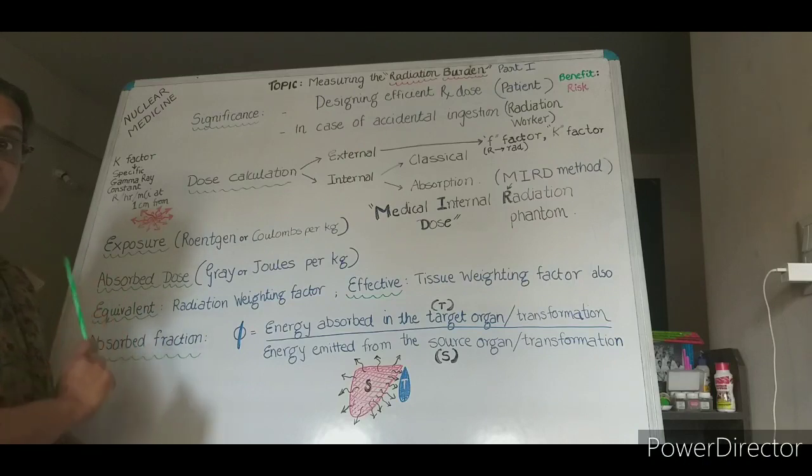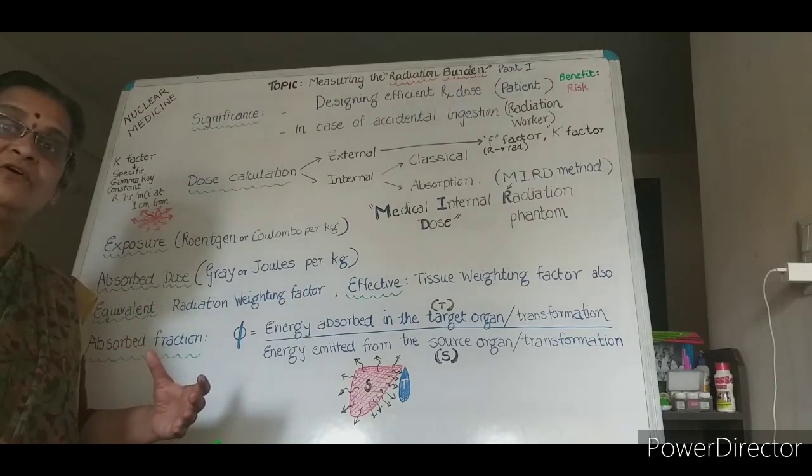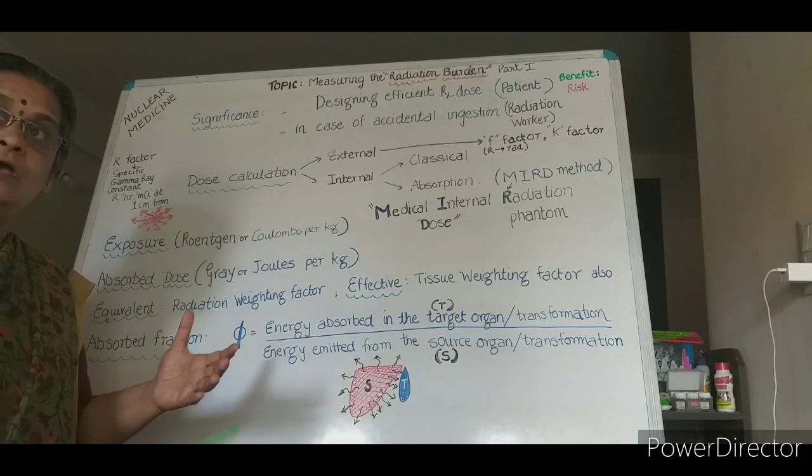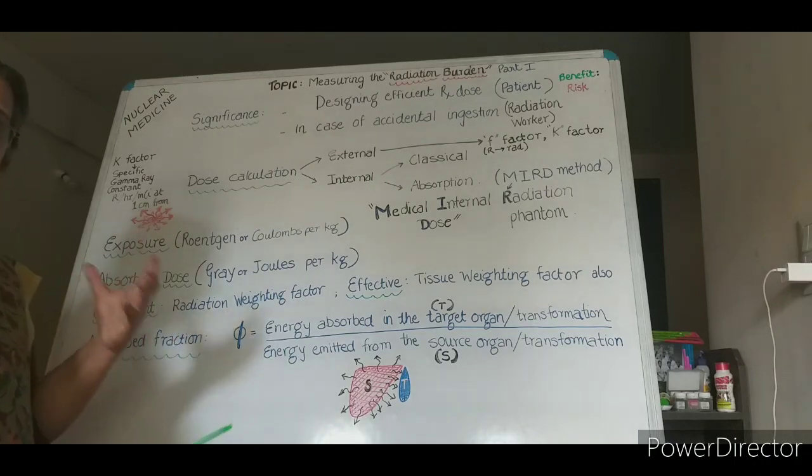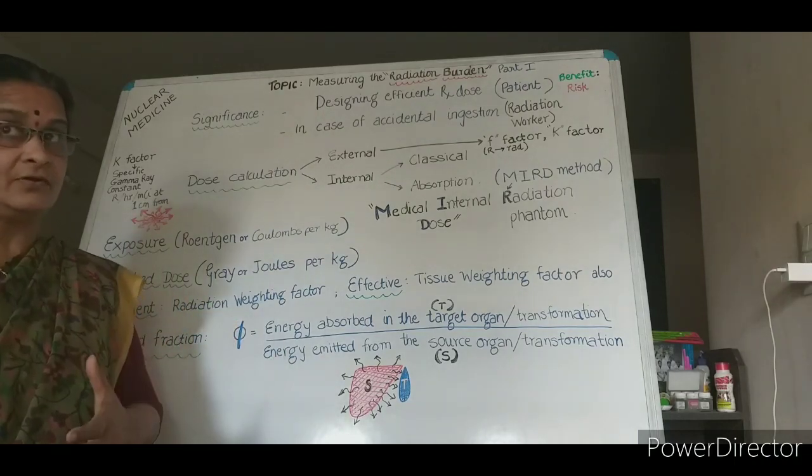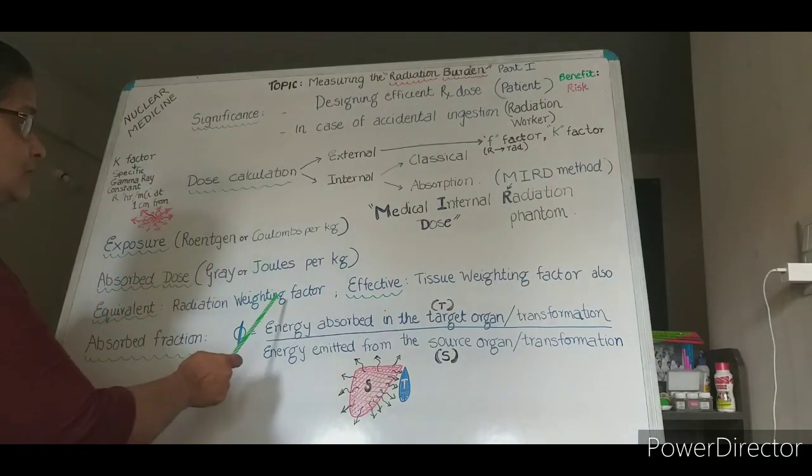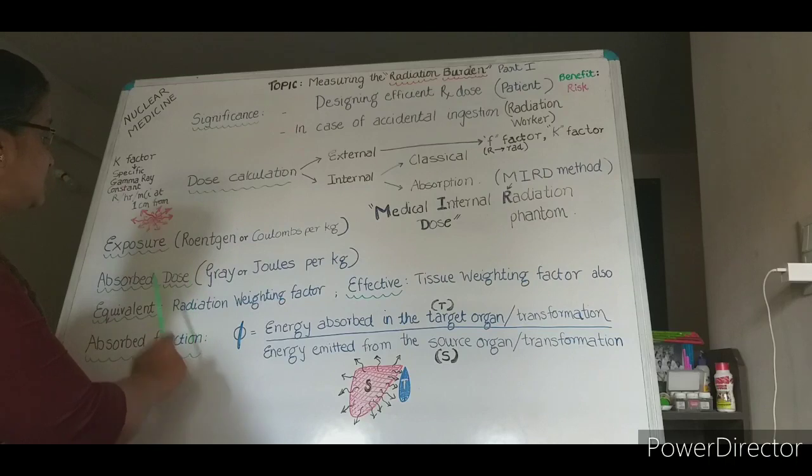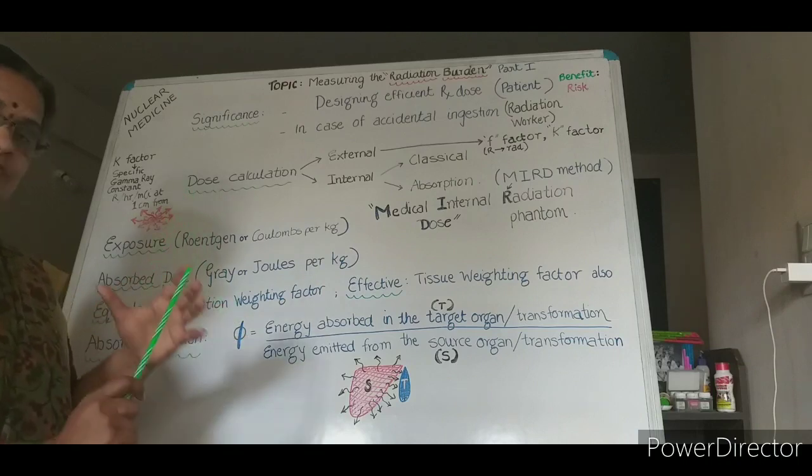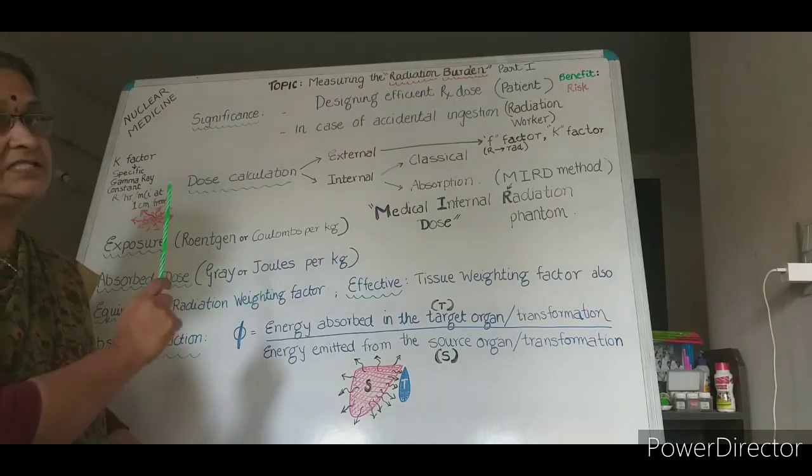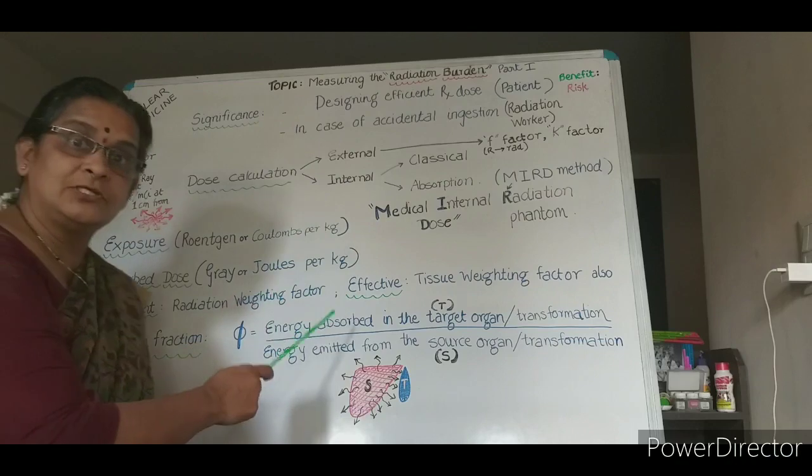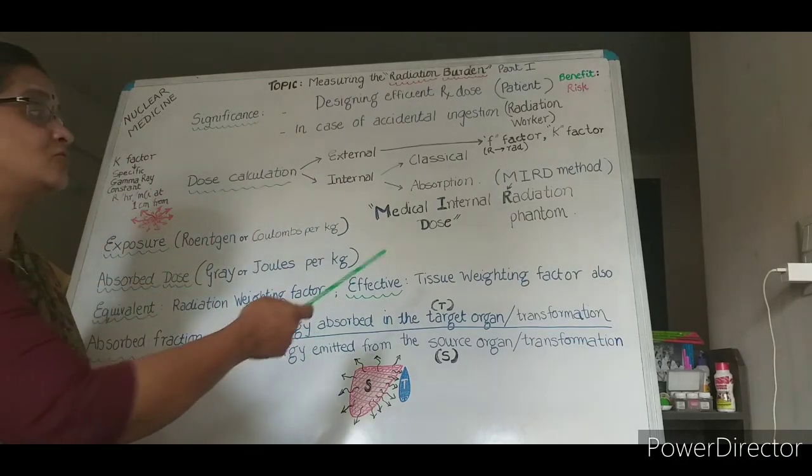Here again, we cannot leave it out there. Equivalent dose: in the examination, suppose your questions are very difficult. The radiations which are being emitted can be alpha, beta, or gamma. Accordingly, the weightage is different. So the questions can be easy or difficult, like they can ionize more or less. Depending on that, there is a factor which you have to multiply by the absorbed dose to get the equivalent dose to the receiving medium. And here the units will be sievert. And the effective dose will include another factor, and that is about tissue weighting factor.